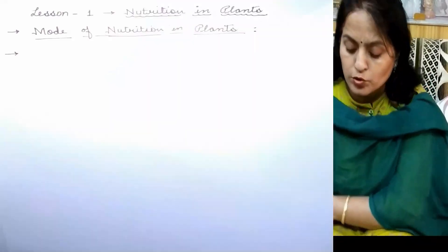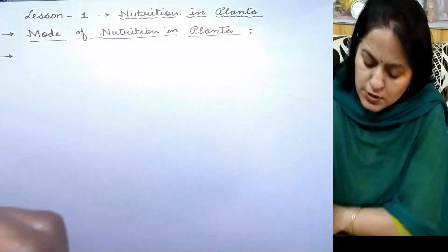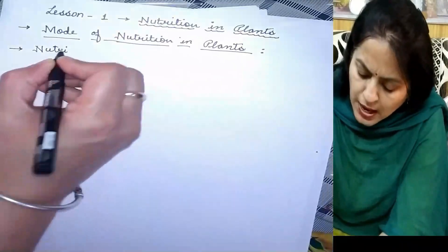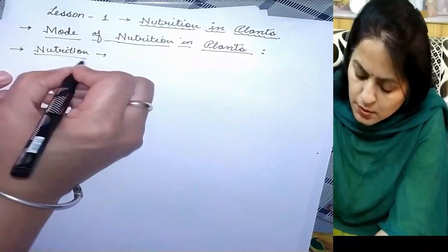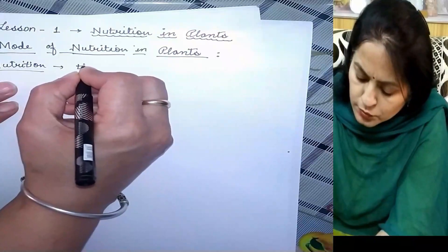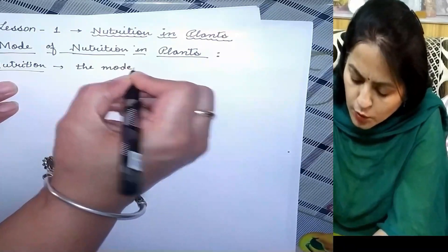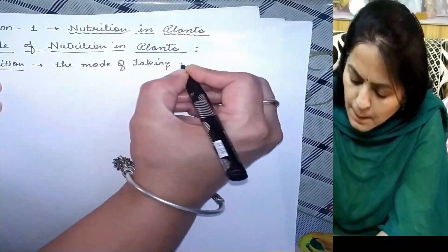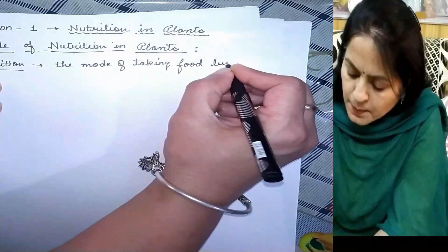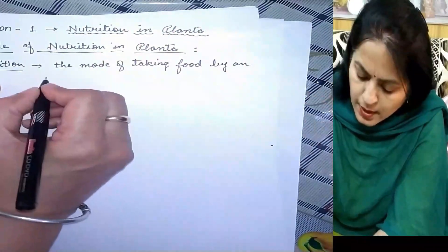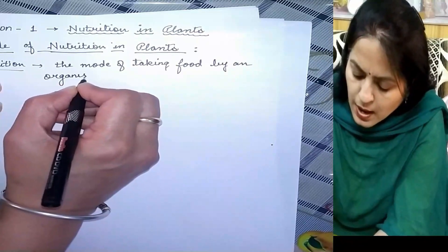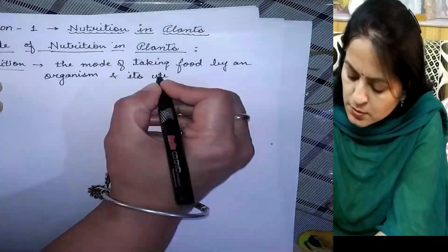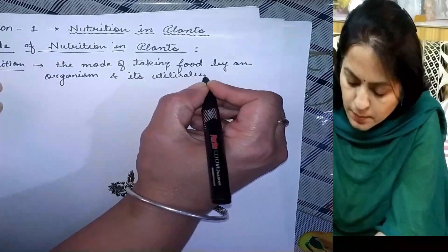Our first heading is mode of nutrition in plants. You should know what the meaning of nutrition is. Nutrition is the mode of taking food by an organism and its utilization by the body.